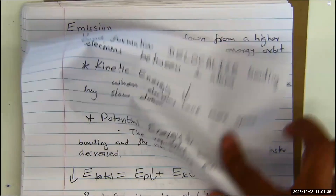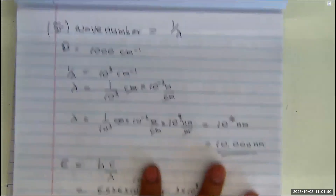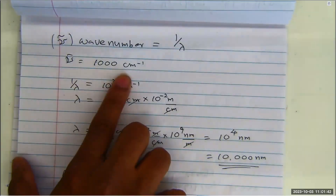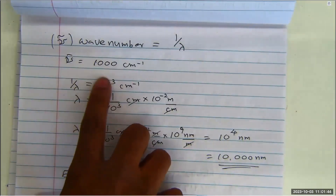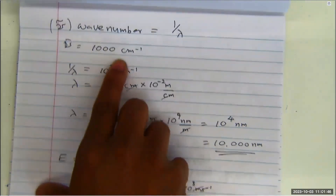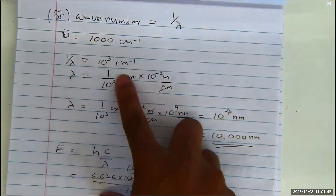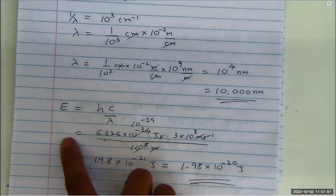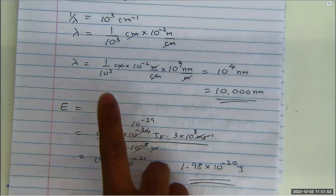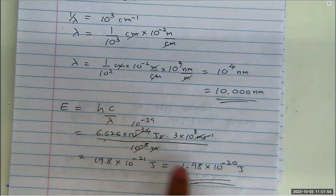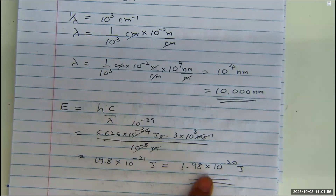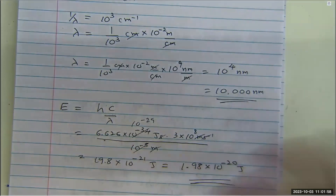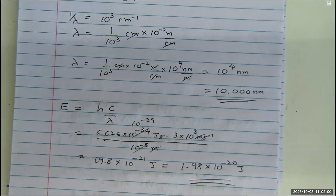We already talked about this and solved for it. We are given the wave number for the CO stretching frequency, which is 1000 per centimeters. We converted that to meters, which is 10 to the power of minus 5 meters. Then we plug that into the equation to get the energy of that transition, which is 1.98 times 10 to the power of minus 20 joules.